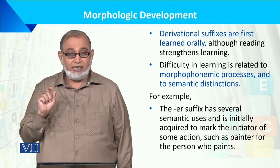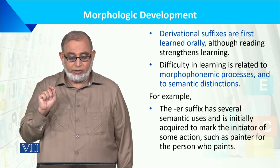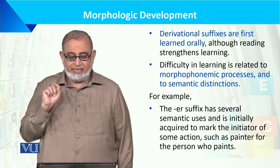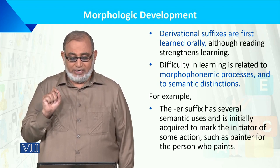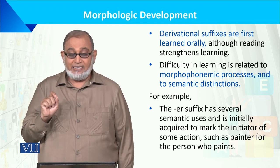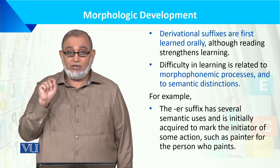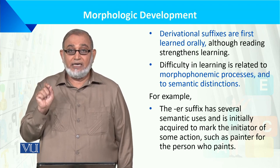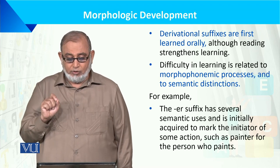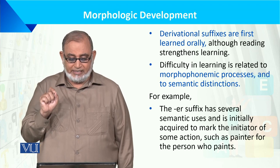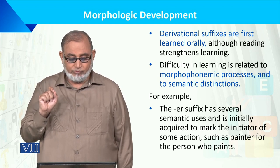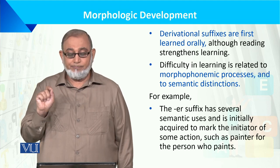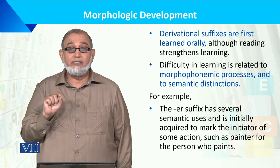Derivational suffixes are first learned orally, although reading strengthens learning. Difficulty in learning is related to morphophonemic processes and semantic distinctions — الفاظ سازی، آوازوں اور معنی کو سمجھنا اہم ہے۔ For example, the ER suffix has several semantic uses and is initially acquired to mark the initiator of some action, such as 'painter' for a person who paints.